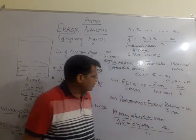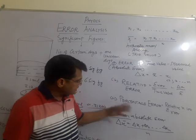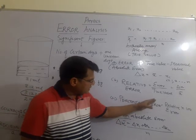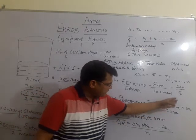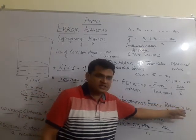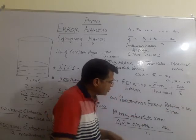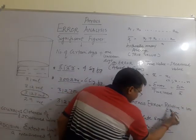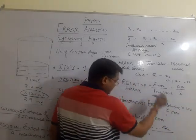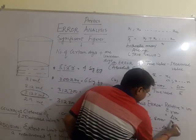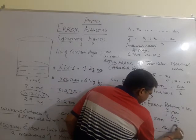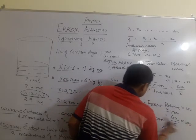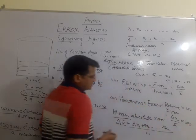Percentage error is given by the relative error expressed as a percentage. That is: relative error multiplied by 100, which equals (delta x / x-bar) × 100. This gives us the percentage error.